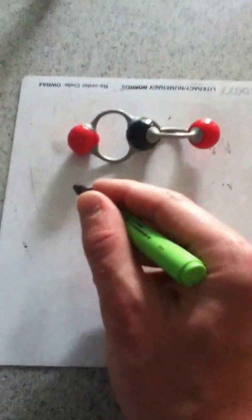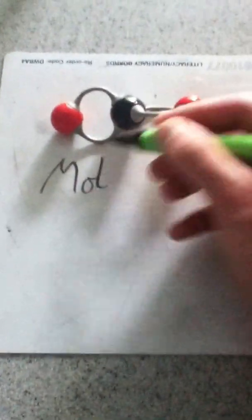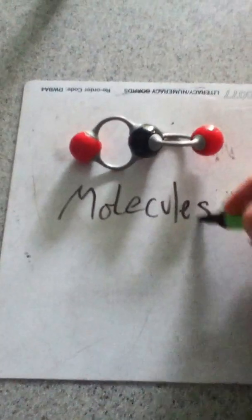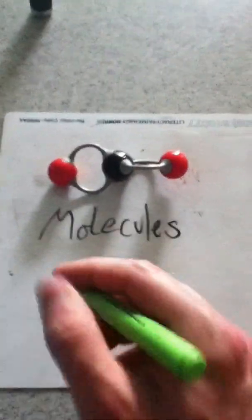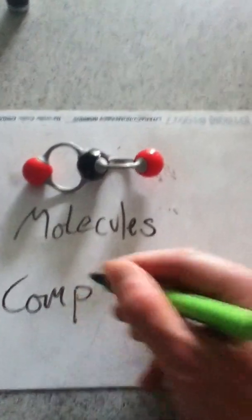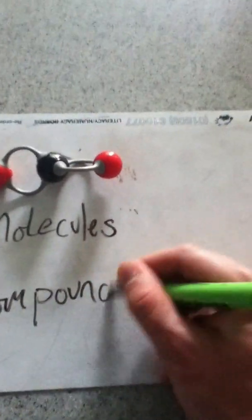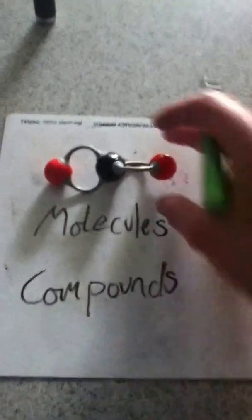Now, in our third group, you can see again, these are molecules because they are atoms that are bonded together. But the difference is these molecules, instead of being made up of the same atoms joined together, like two oxygens or two hydrogens, we've got different atoms joined together. So we would describe these as molecules because they are atoms joined together. But we would also describe them as compounds because they are different atoms.